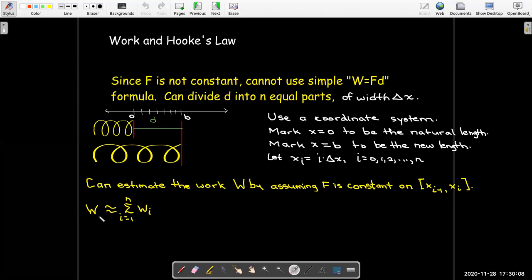So then the work done in stretching it all the way out to a distance d, which means x equals b, could be approximated by adding up all of those forces that I calculated for each one of those increments. So that would be the sum from i equals 1 to n of k times the sample value times delta x.